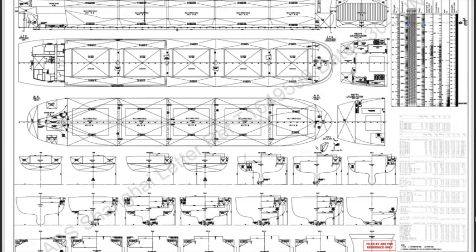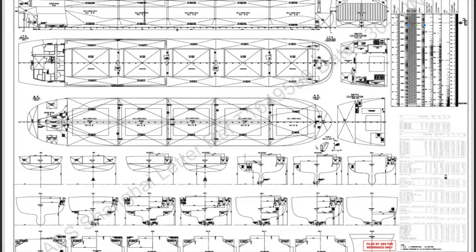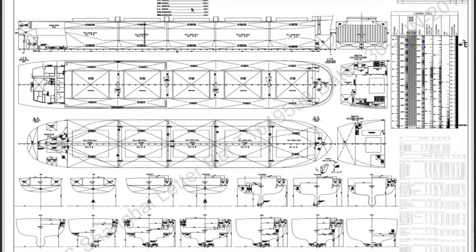There is also a table on the right side. This table gives the list of all the compartments, the location which is also the frame number, the net volume of the compartment, the centers of gravity, and also the free surface moment — we'll discuss it in detail. The last part is the loading scale, also known as the dead weight scale, and I'll tell you how to use this scale.